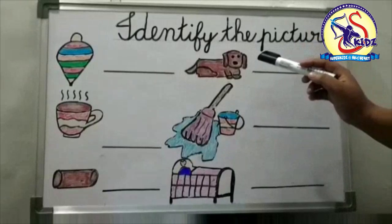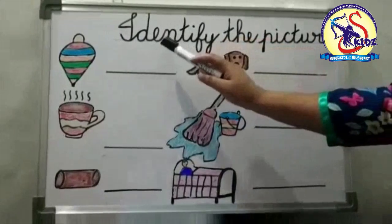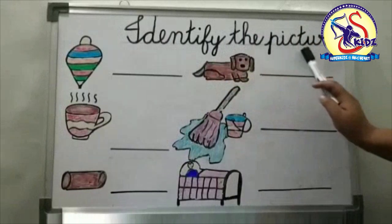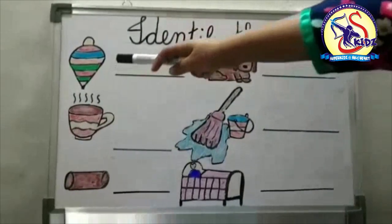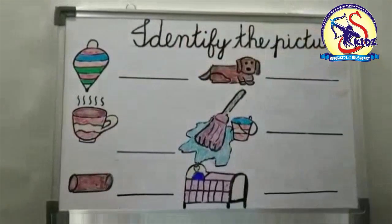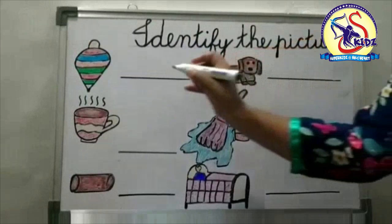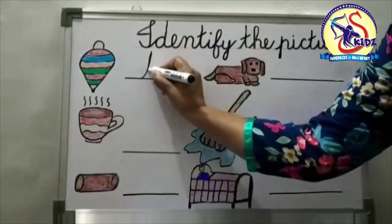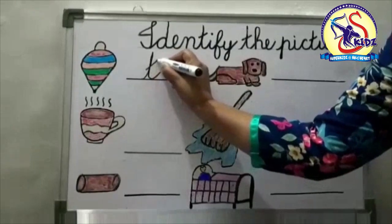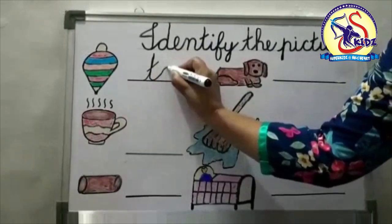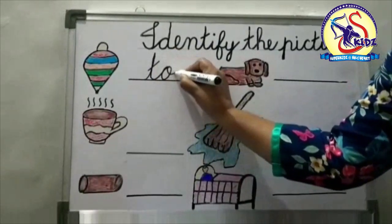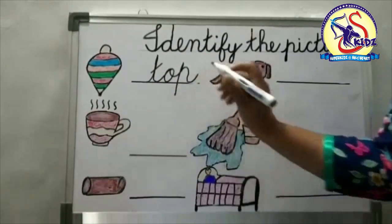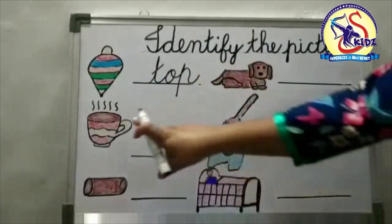Now kids, we will do our next exercise: identify the pictures. Now see the first picture. What is this? This is a top. T-O-P, top.